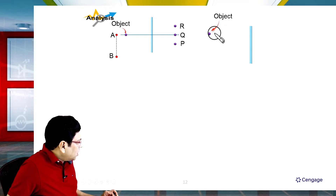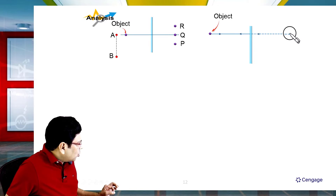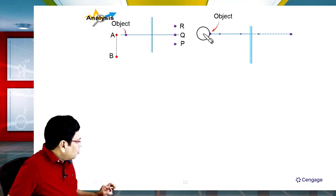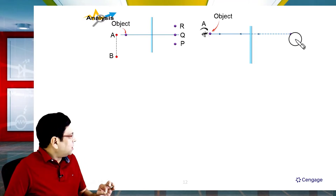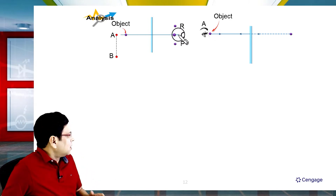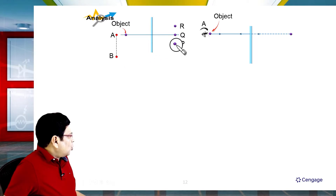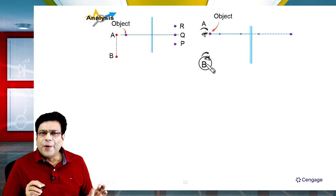The distance of the object and image from the plane mirror are equal. The image position Q is in front of the plane mirror. If we look here, we see the image. The rays from the object reflect off the mirror and the reflected rays diverge.